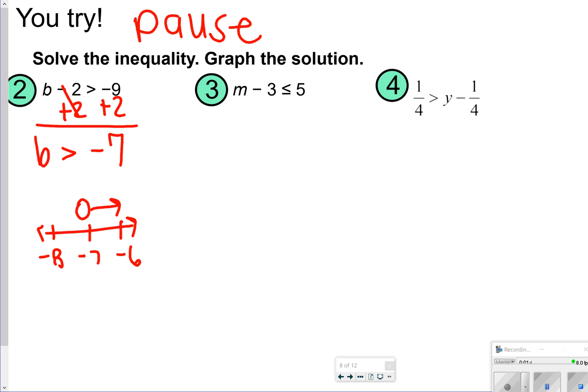For number 3, we want to add 3 to both sides. So we get m is less than or equal to 8. So on our number line, we have 7, 8, 9, and less than or equal to is a closed circle pointing left.